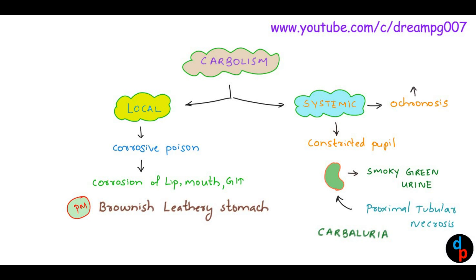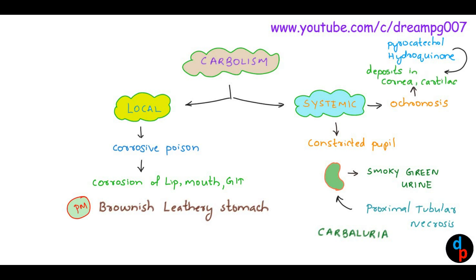Systemically, Carbolic Acid can also cause Ochronosis. Ochronosis is due to the deposition of toxic metabolites of Carbolic Acid — like Pyrocatechol or Hydroquinone — in the connective tissues of the cornea and cartilage.